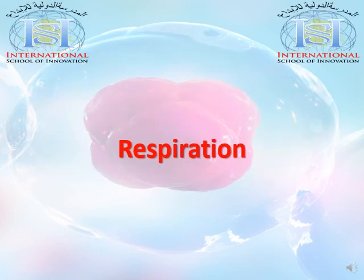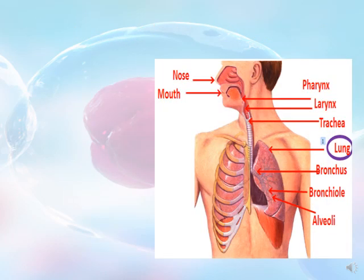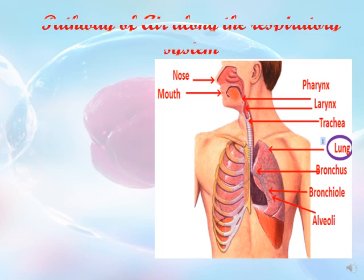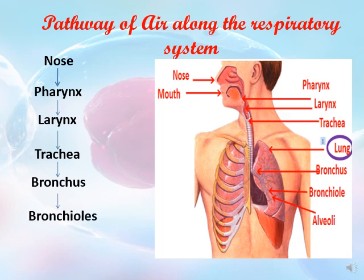Now let's move to respiration. To talk about the human respiratory system, you have to know that the most important organ is the lungs. The pathway of air through the respiratory system starts at the nose, then moves to the pharynx, larynx, trachea, bronchus, bronchioles, and finally to the alveoli.